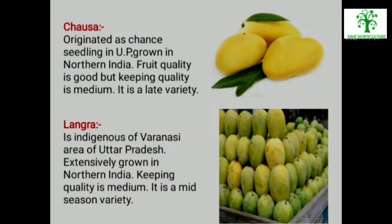Chausa: This variety originated as a chance seedling in the orchard of Tandulkar of Sandila, district of UP. It is grown in Northern India due to its characteristic flavor and taste. Fruit quality is good but keeping quality is medium. It is a late variety.